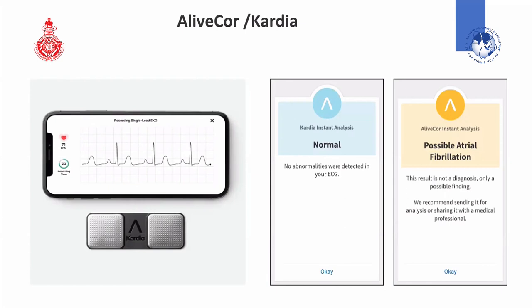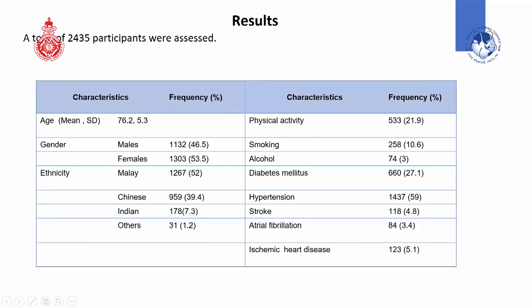The iLifeCo cardiac app gives a 30-second tracing and at the end of 30 seconds, it indicates either a normal ECG tracing or a possible AFib. In our results, 2,435 participants were assessed, with a mean age of 76 (SD=5). About 46.5% were male. The ethnic distribution was mostly Malay, followed by Chinese, Indians, and others.